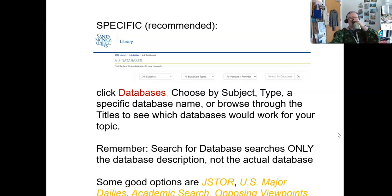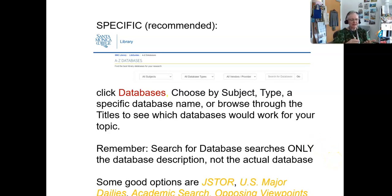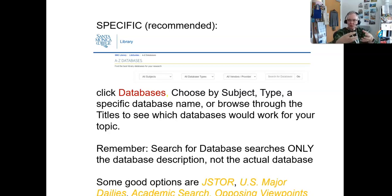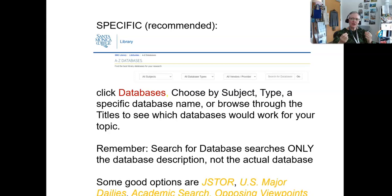Some good options for general searching include JSTOR, which covers all scholarly journals. US Major Dailies — I like this database because instead of going to the New York Times, LA Times, Wall Street Journal, and Washington Post websites individually and dealing with their paywalls, I can go to US Major Dailies. It has all of these plus others, does a search from 20 years ago to today, full text, without having to pay for anything, and gives help with citation. Academic Search is a general database — a little bit of everything. And Opposing Viewpoints is a good place to go if you're unsure about your topic, as it has lists of topics and starting places.